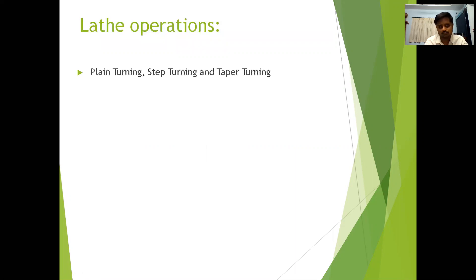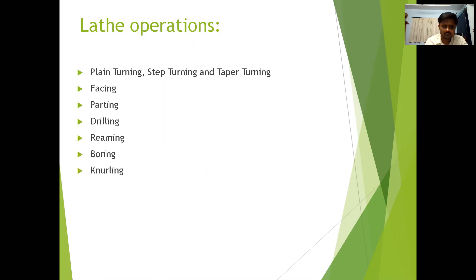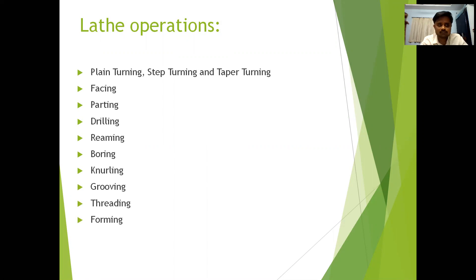Lathe operations: the first one is plane turning, step turning and taper turning, facing, parting, drilling, reaming, boring, knurling, grooving, threading and forming. These are some operations you can perform on the lathe machine. Along with these, we can perform grinding, gear cutting and milling operations also, but for those operations we need some lathe attachments.